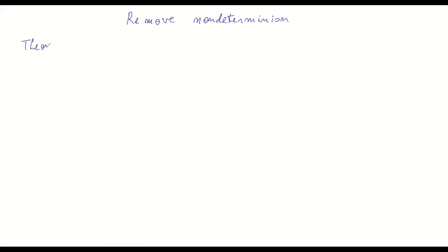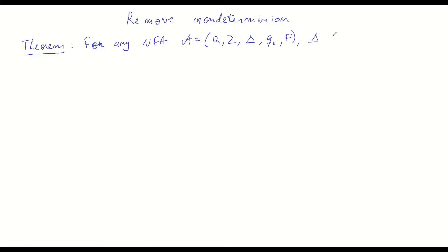What I would like to prove is this particular theorem saying: for any non-deterministic automaton — whose transition relation has no epsilon transitions, because we showed how to remove those in the previous lecture — there is an equivalent deterministic finite automaton. And I'm going to have a constructive proof for this, meaning I'm going to show you a method for how to build this DFA, so that for any non-deterministic automaton you might take, you will be able to build an equivalent deterministic automaton.